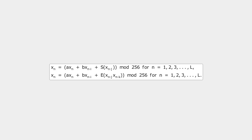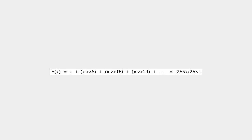In sections 13.5 and 13.6, linear functions were used to assure a long period for the generator. Here there is no period, so there is no such constraint. Some nonlinear functions that can be used are shown here. The subscripts wrap around; a and b are odd integers from 1 to 255, and i, j, and k are integers between 1 and L minus 1. S can be either a fixed nonlinear substitution or a variable key-mixed substitution.